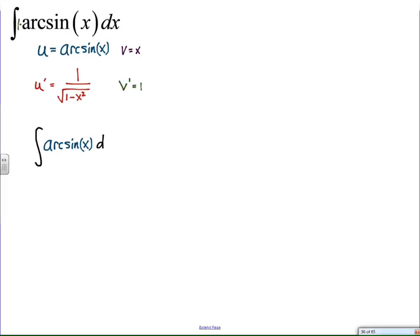And then using our algorithm for integration by parts, we're going to have u times v, subtract, and then I skipped a step here really quick, we're going to have v times u prime. So x times one over the square root of one minus x squared is x over the square root of one minus x squared, dx.